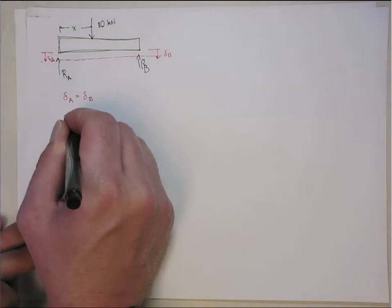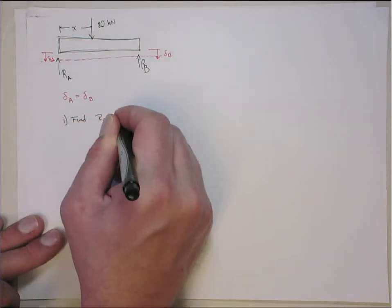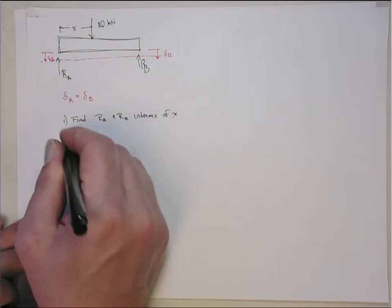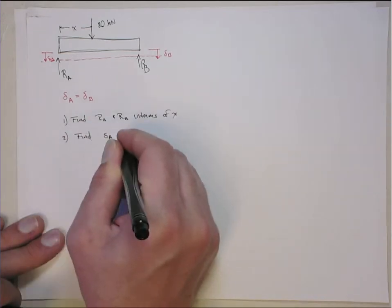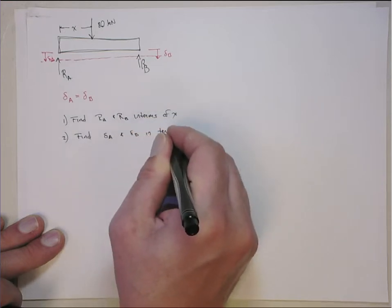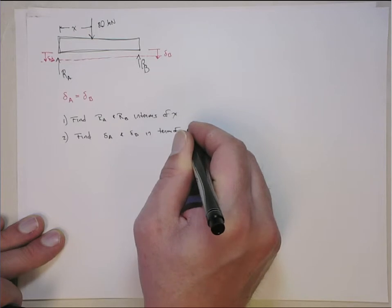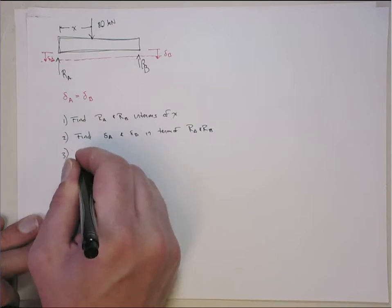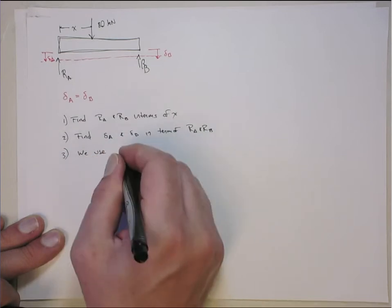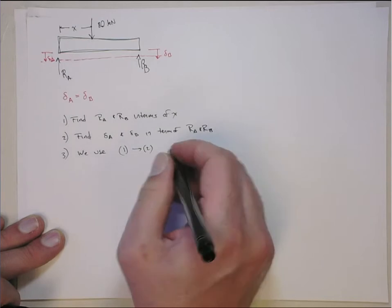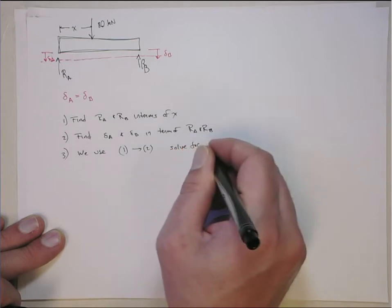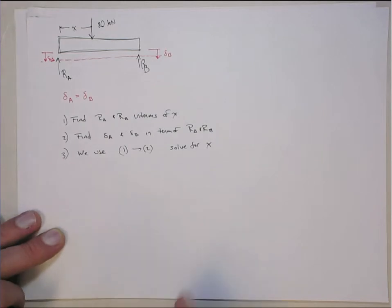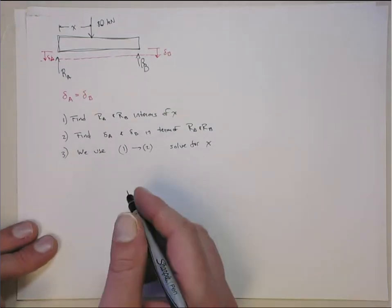One is to get the reaction forces in terms of X, and then the second one is to get the elongations in terms of the reaction forces, which will then give me a relationship in terms of X. So once I find the reaction forces in terms of X, I can use that in this relationship to get this constraint equation involving X and then solve for X. So those are the two steps. So first, I'll write it out. Find RA and RB in terms of the unknown X, and then we'll find delta A and delta B in terms of RA and RB.